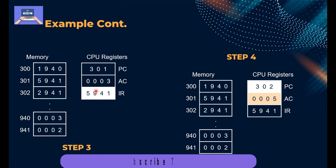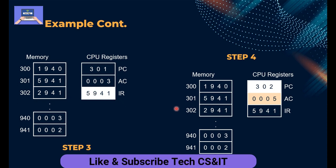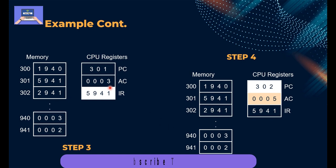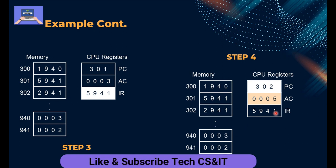In step three, when the program counter updates, the new address 301 causes the IR to be updated — the data at address 301, which is 5941, is now in the IR. When we execute this, opcode 5 means add. We add the data at address 941, which is 0002, to the accumulator, which holds 0003. So 0003 + 0002 = 0005. The accumulator is now updated to 0005. Execution completes and the program counter updates from 301 to 302.